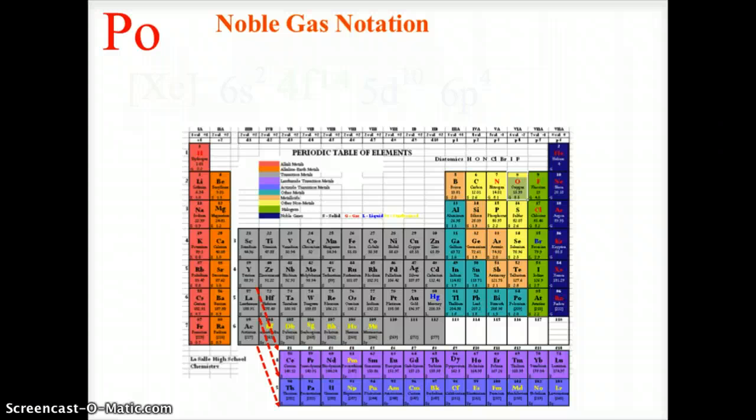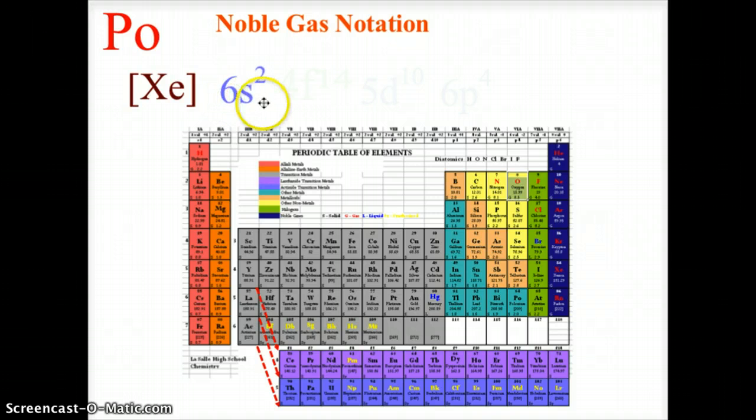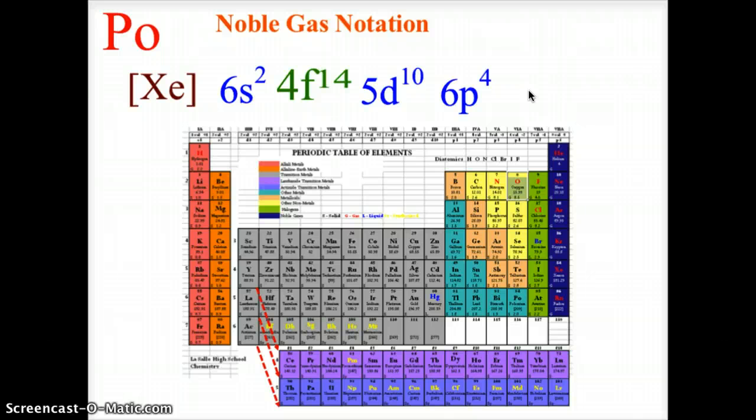Let's do one more example, the noble gas notation for polonium. Go ahead and write that out on a separate piece of paper, turn off the video, then come back. Polonium is located in the sixth period, fourth column of the p block. We go up one row to the noble gas xenon, then follow up with the sixth energy level 6s2 4f14 5d10, followed by 6p4, the noble gas notation for polonium.